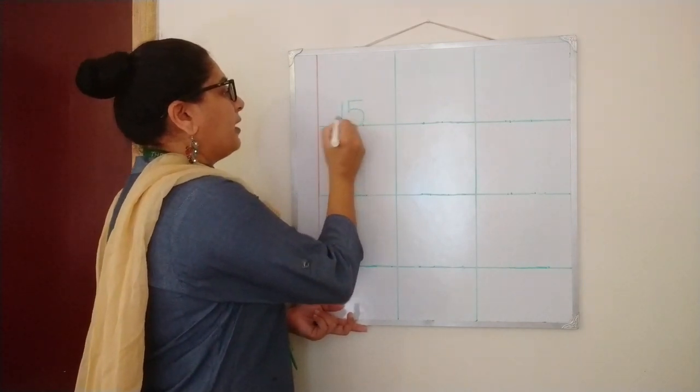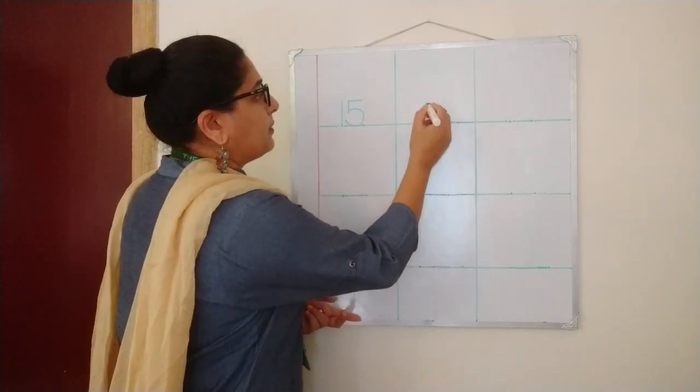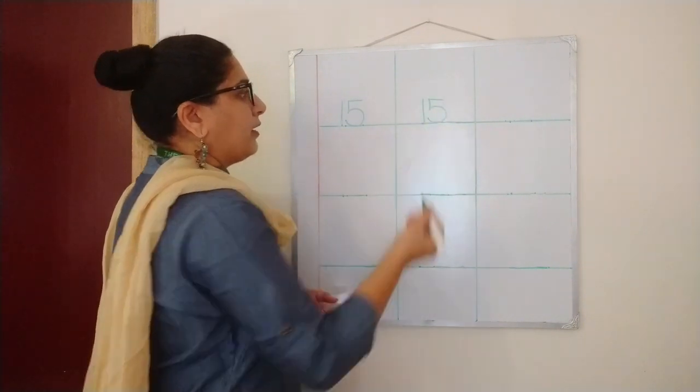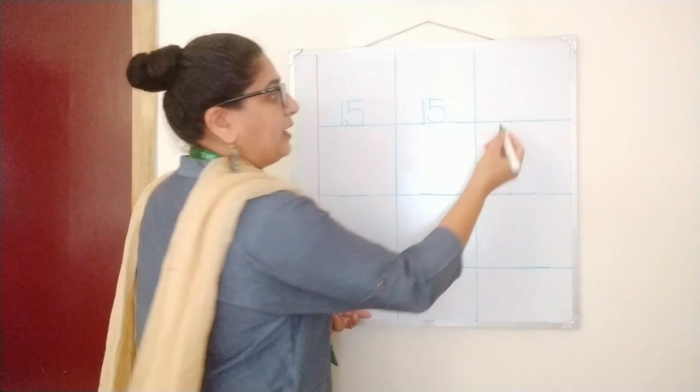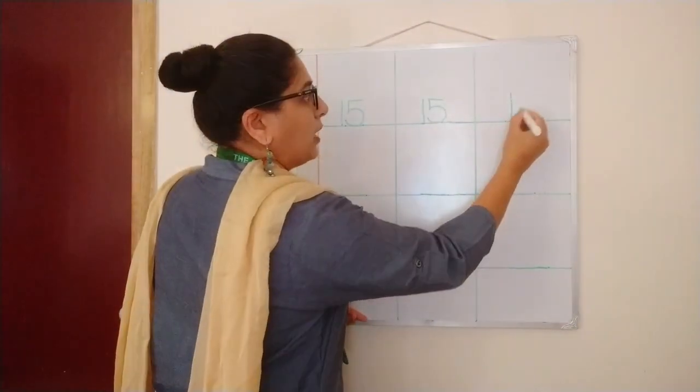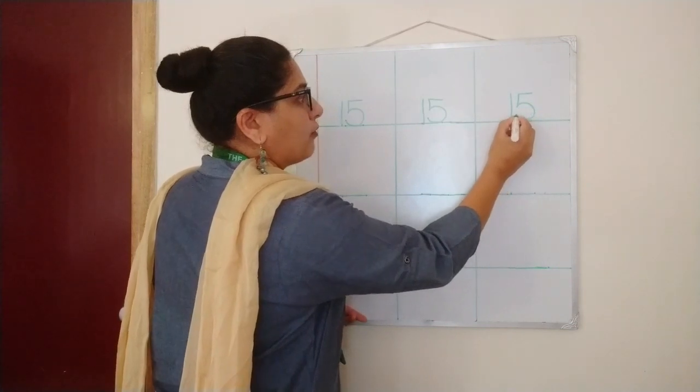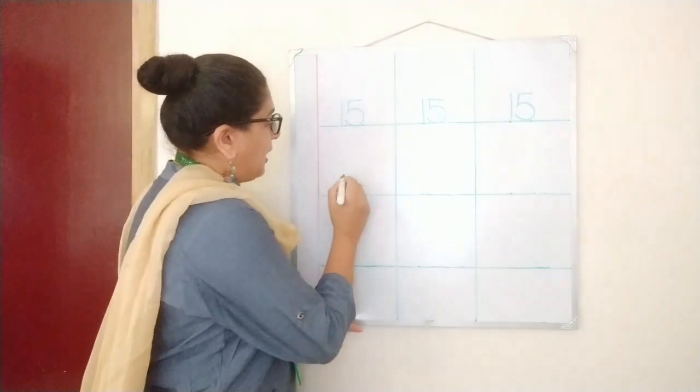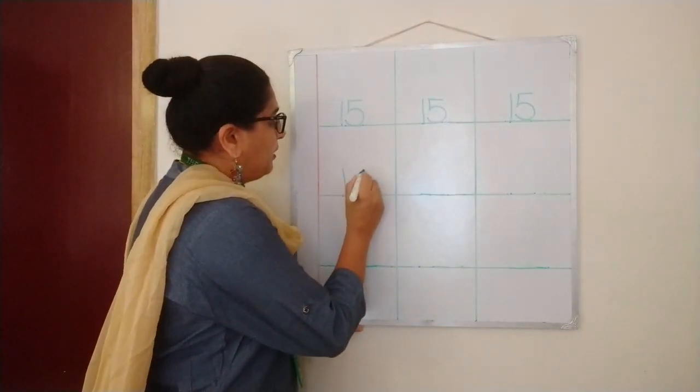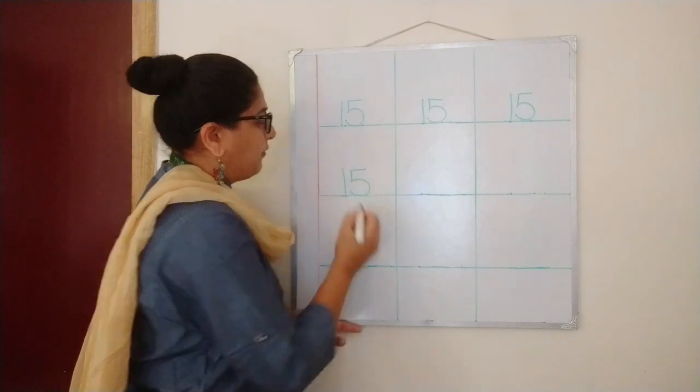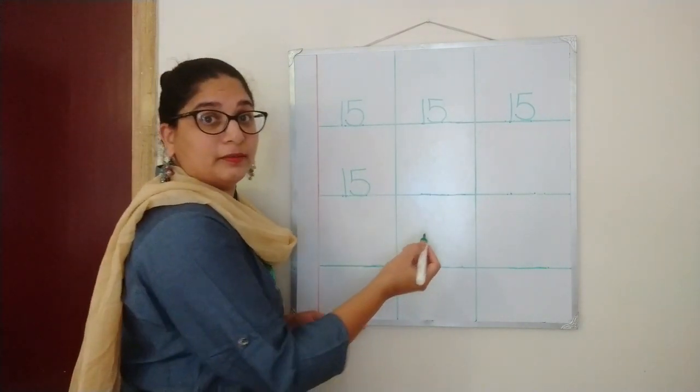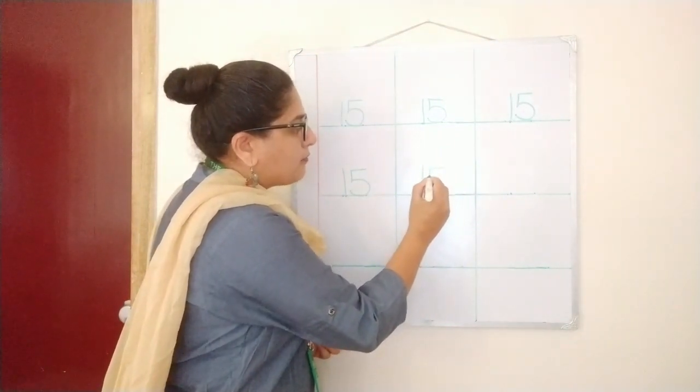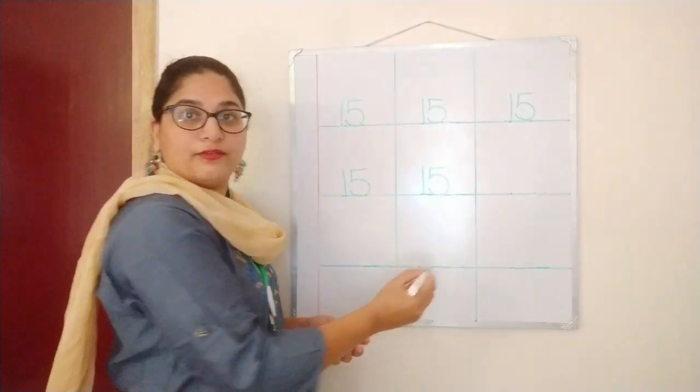1, 5, 15. The number is touching the bottom line children. See, 1, 5, 15. 1, 5, 15. Now, 1, 5, 15. 1, 5, 15.